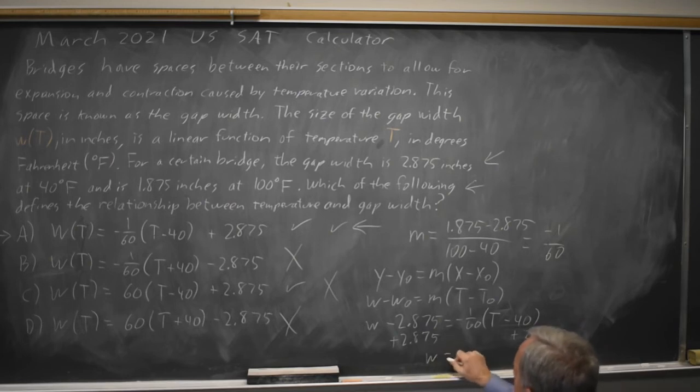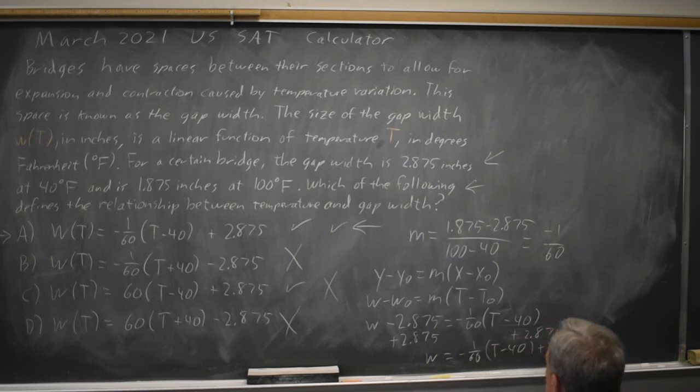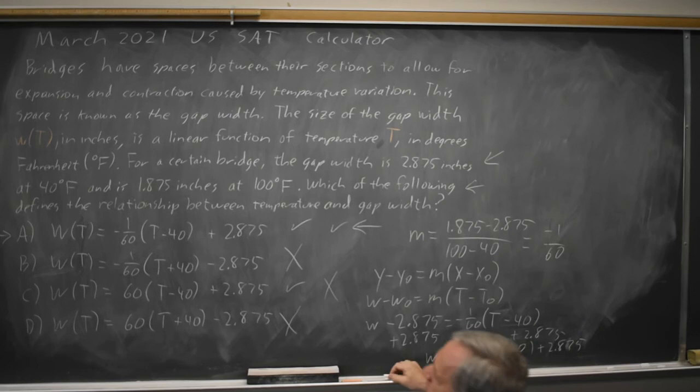that comes down to the formula w equals negative 1 over 60 times t minus 40 plus 2.875, which is choice A.